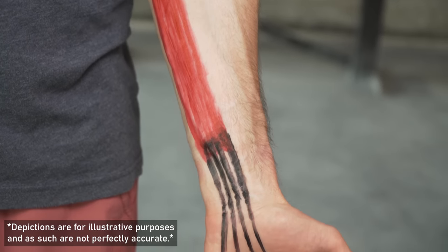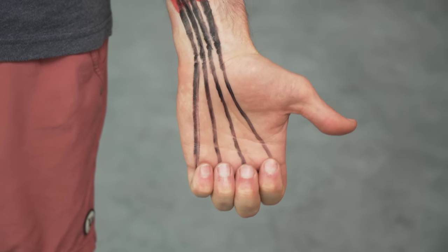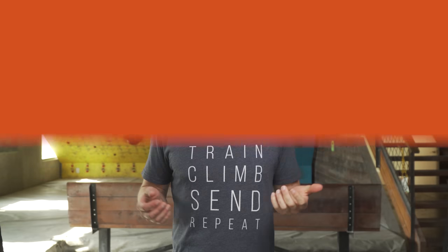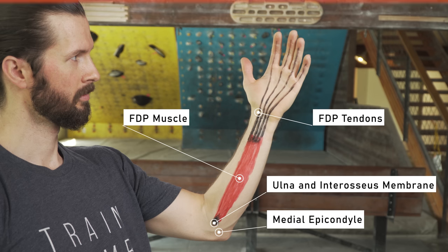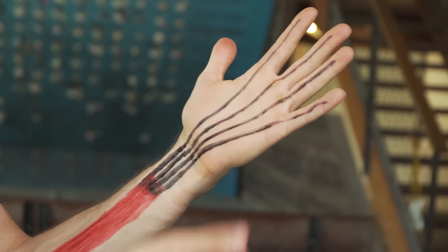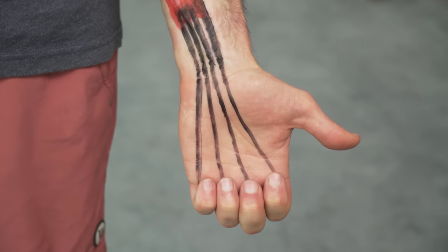The FDP is the most important finger flexor we have. It helps in multiple hand positions and developing its strength is vital to our advancement in climbing, but it's also the second most commonly injured tissue for climbers. The FDP is a muscle that originates on the ulna and interosseous membrane, unlike many of the other flexors that originate at the medial epicondyle. It travels down the anterior forearm and then splits into four tendons, which attach at the base of the distal phalange and allow the FDP to fully flex the fingers.